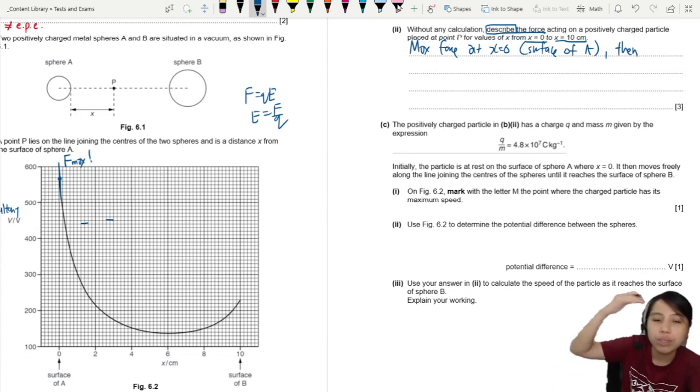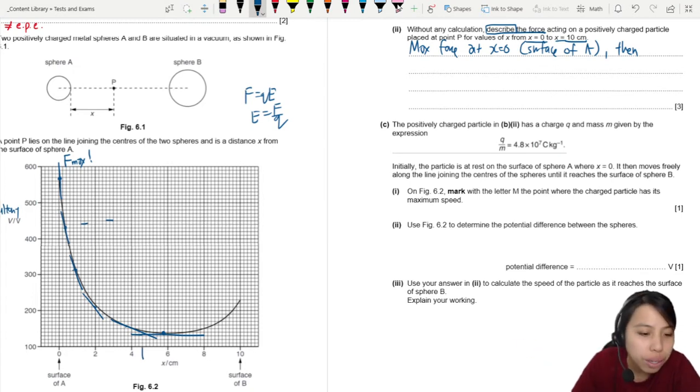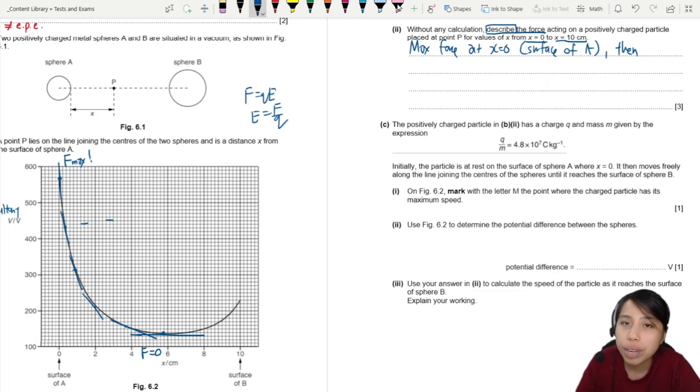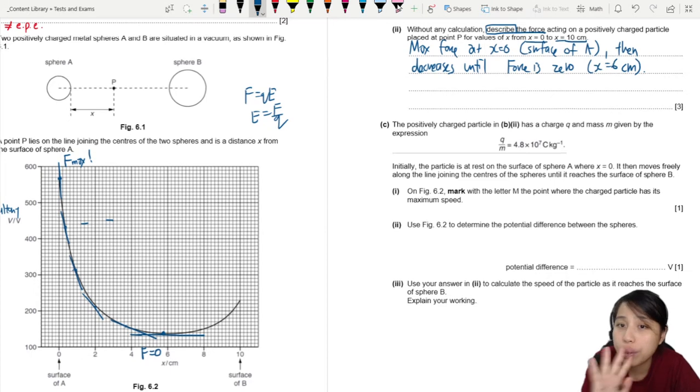Then what happens? So you look at the graph over there, right? It's becoming less and less steep. Eventually, at some point down here, it's flat. The gradient of the tangent is flat, so there's no more force. So your force is going to be decreasing until F is 0, because gradient is 0. So then it's at maximum, then decreases until you reach a point where force is 0, force on particle is 0. And where does that occur? Let's just throw in the detail: 6 cm.